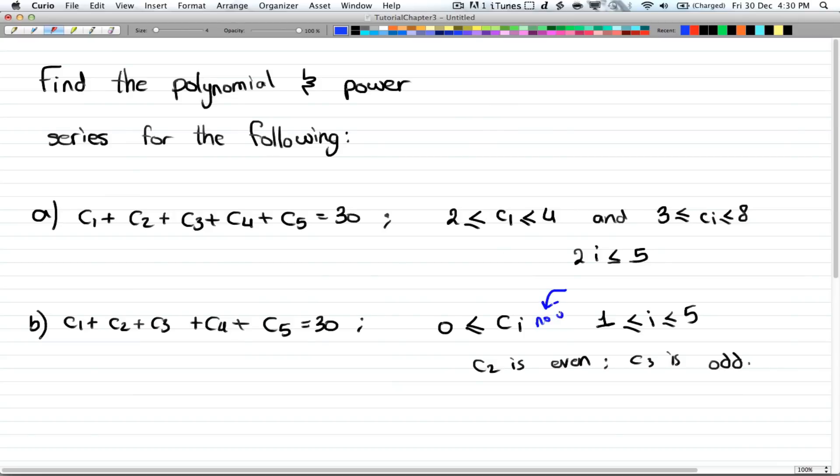So to find the power series, you have to make sure that you have no upper limit. And that implies that you can have a power series. But over here, there is an upper limit, which is four. So you cannot have a power series.